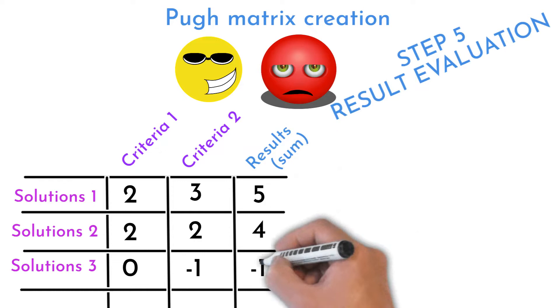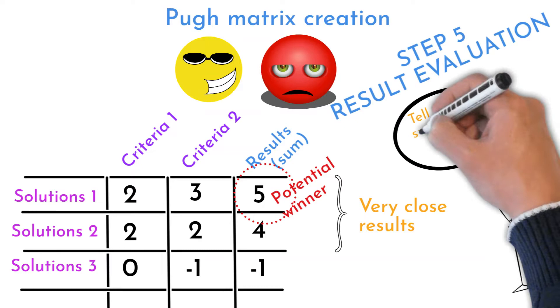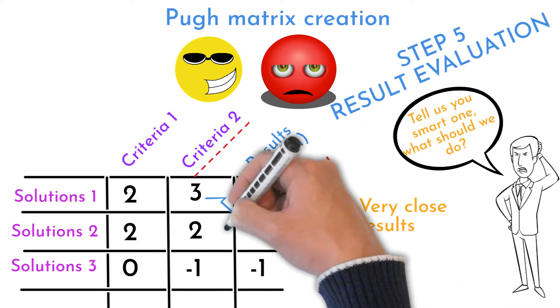Discuss evaluation results if it does make sense. If there are very close evaluation data, that means that there is no clear winner and both solutions are good to be implemented. Here is some advice if you are in such situation. Choose the most important selection criteria and choose solution that is rated higher as a winner.